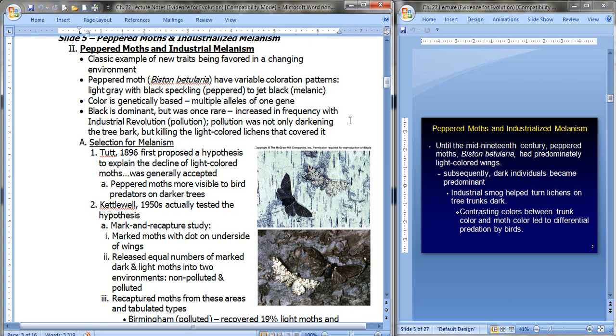So in looking at the selection for melanism, in 1896, Tutt first proposed a hypothesis to explain the decline of the light colored moths. And it was generally accepted. He said that peppered moths are more visible to the bird predators on darker trees. So as the trees became darker with the pollution, then the lighter colored moths stood out and were picked off by birds. Makes sense.